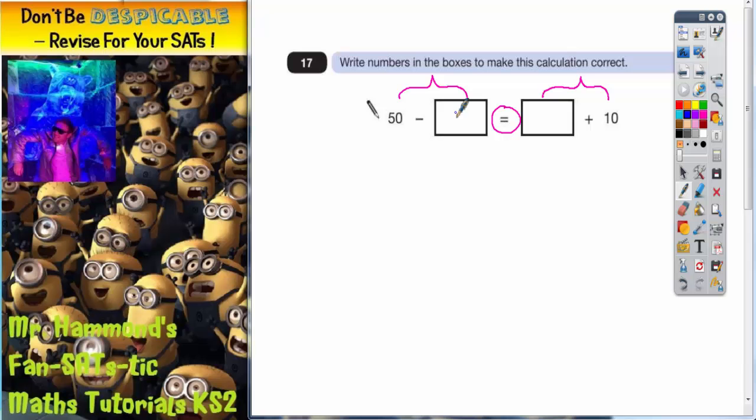So the best thing to do here is just choose a number. So let's go for a nice easy number to deal with. Let's go for number 10. So if you put the number 10 in there, 50 take away 10 would make 40.